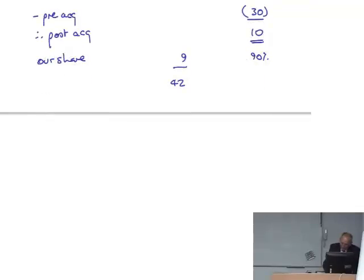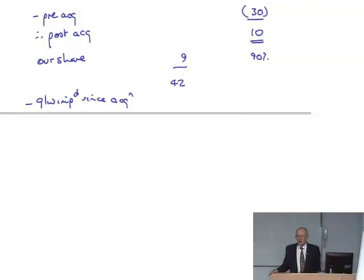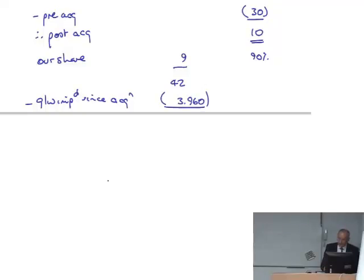Less goodwill impaired since acquisition. 4,400 wasn't it. Times 90% just our share, 4,400 times 90% I think it's 3,960. Gives me 38,040. Consolidated retained earnings.